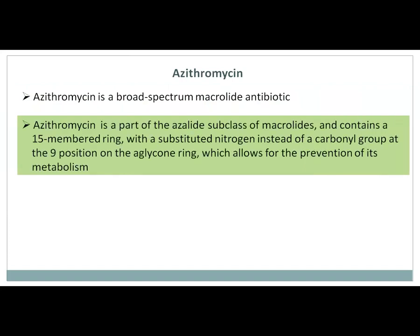This azithromycin is part of the azalide subclass of macrolides and it contains a 15-membered ring with a substituted nitrogen instead of a carbonyl group at the 9th position on the aglycone ring, which allows for the prevention of its metabolism.